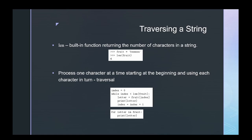Python has a really interesting built-in function called len — short for length — and it returns the number of characters in a string. So if I say len(fruit), I get six, because B-A-N-A-N-A has six letters. Now if I want to process one character at a time starting at the beginning and count through each character in turn, that's called a traversal. I'm traversing through the string, walking through it from beginning to end step by step.